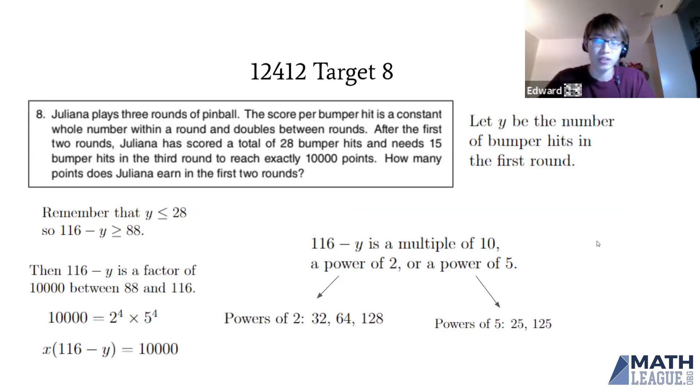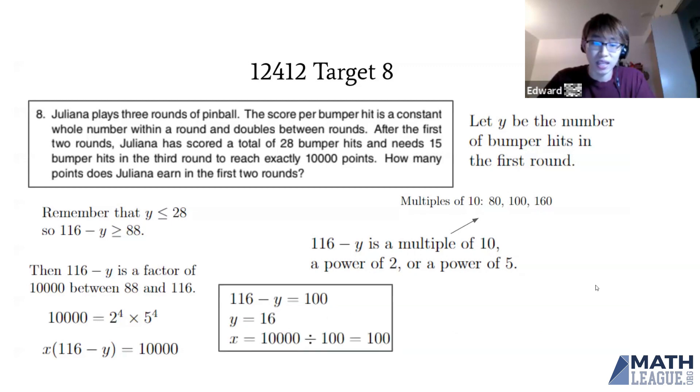So 116 minus Y must be a multiple of 10. When divided by 10, it must be divisible by only 2s and 5s. The possibilities are 80, 100, and 160. Only 100 is in the range 88 to 116, so 116 minus Y equals 100, meaning Y equals 16 and X equals 100.